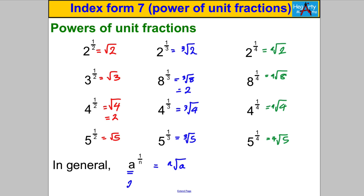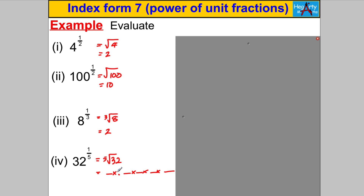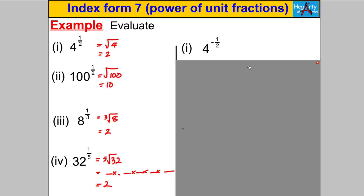In general, a base number to the power of one over n means the nth root of that base number. For example, 27 to the third means the cube root of 27 — what number multiplied by itself three times gives 27? It's 3. Now let's try some questions. Four to the half is the square root of four, which is two. One hundred to the half is the square root of one hundred, which is ten. Eight to the power of a third is the cube root of eight, which is two. And 32 to the power of a fifth: what number multiplied by itself five times gives 32? It's two.